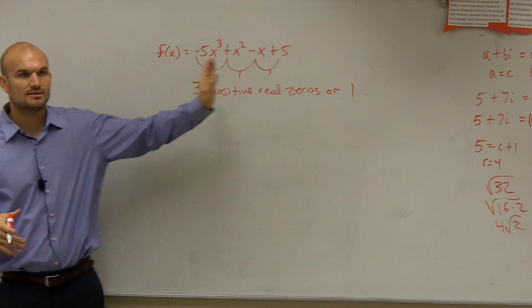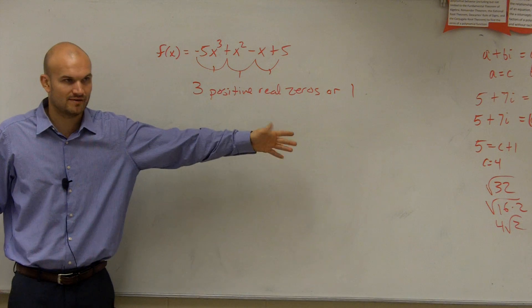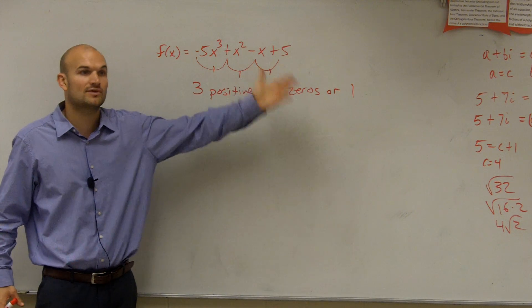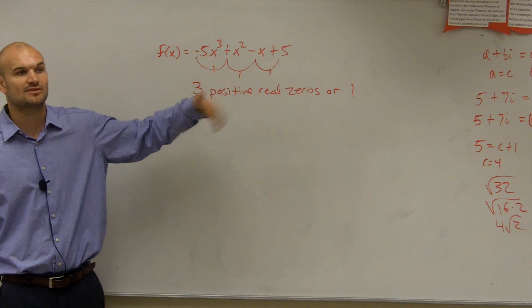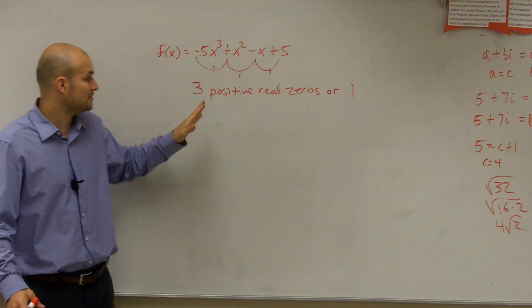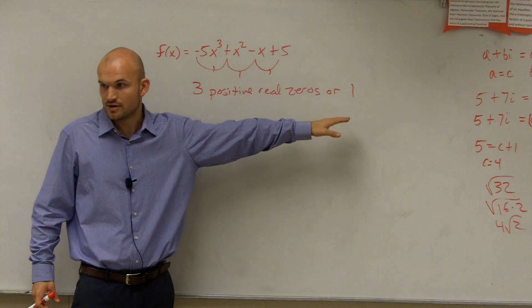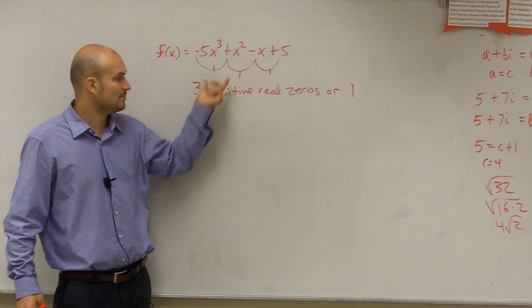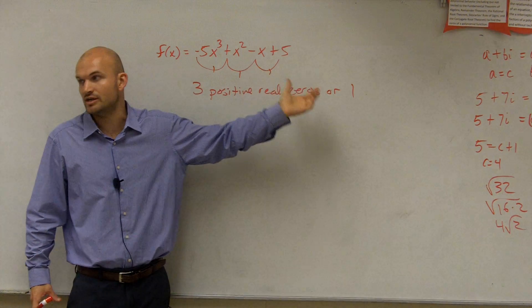So you take 3 and then subtract 2, which would be your even integer. Or it could be, if you have multiple, it could keep on going down. So let's say you had 6, it could be 6, 4, 2, or 0. So I have either three positive real zeros or one positive real zero. So you take the number of variations and then subtract it by your even integer.